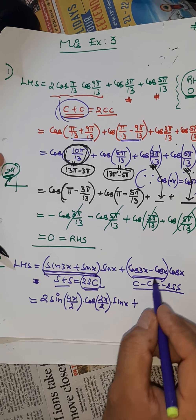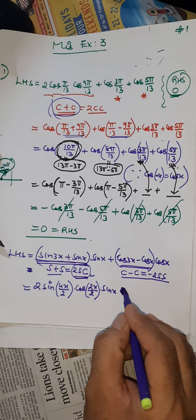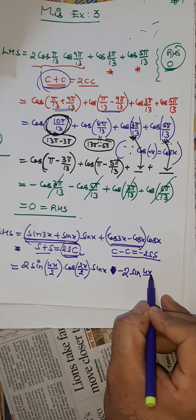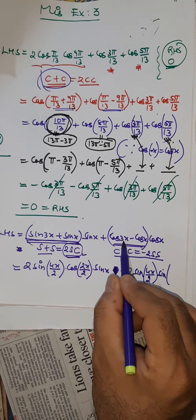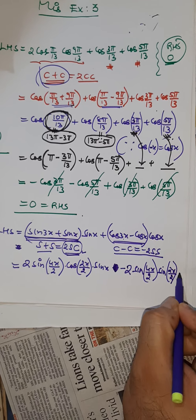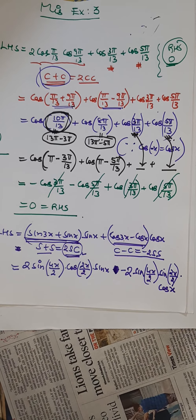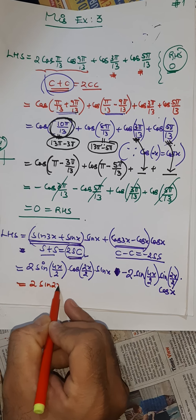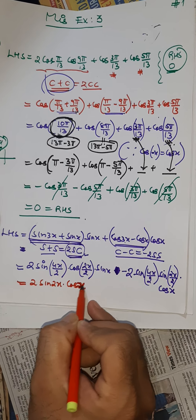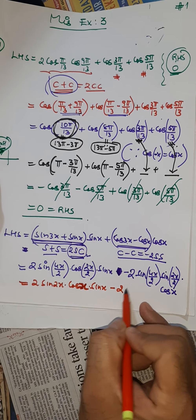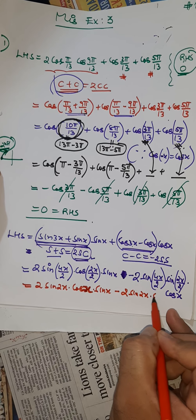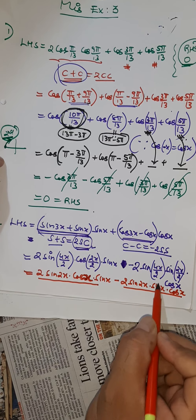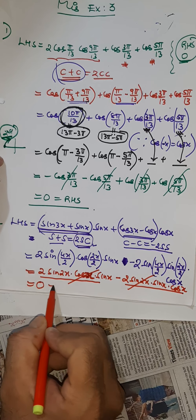Now we simplify: this is twice sin(2x)·cos(x)·sin(x) minus twice sin(2x)·sin(x)·cos(x). You can see this term entirely cancels with this term, so you get zero, which is the RHS.